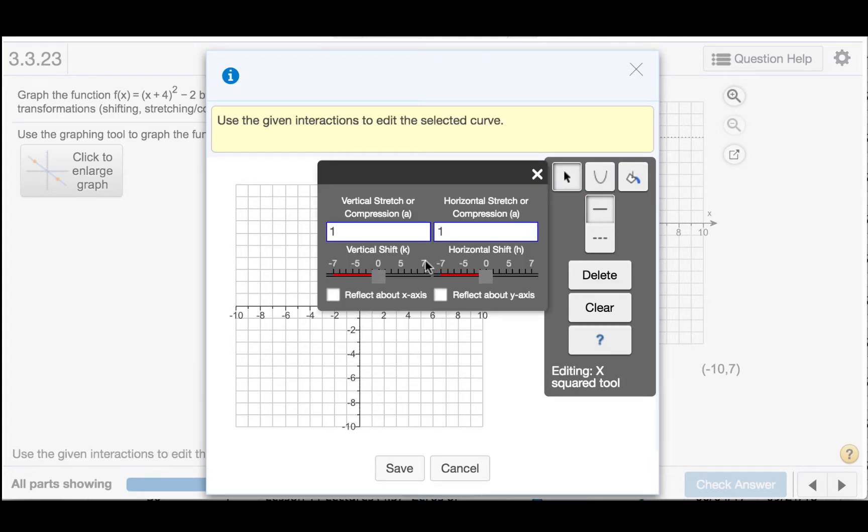Then a box comes up that allows me to make changes. We are not going to do any vertical stretch or compression, so we will leave that at 1. We will not do any horizontal stretch or compression, so we will leave that set at 1.